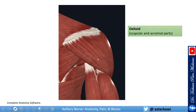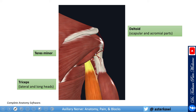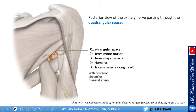Looking under the skin, the first muscle you have is the deltoid with the scapular and acromial part — removing that, you now see the axillary nerve with the circumflex artery. This is the trapezius, lateral and long head; this is the teres minor; and this is the infraspinatus. The quadrangular space is formed by the teres minor, the teres major, the humerus, and the triceps muscle — mainly the long head.